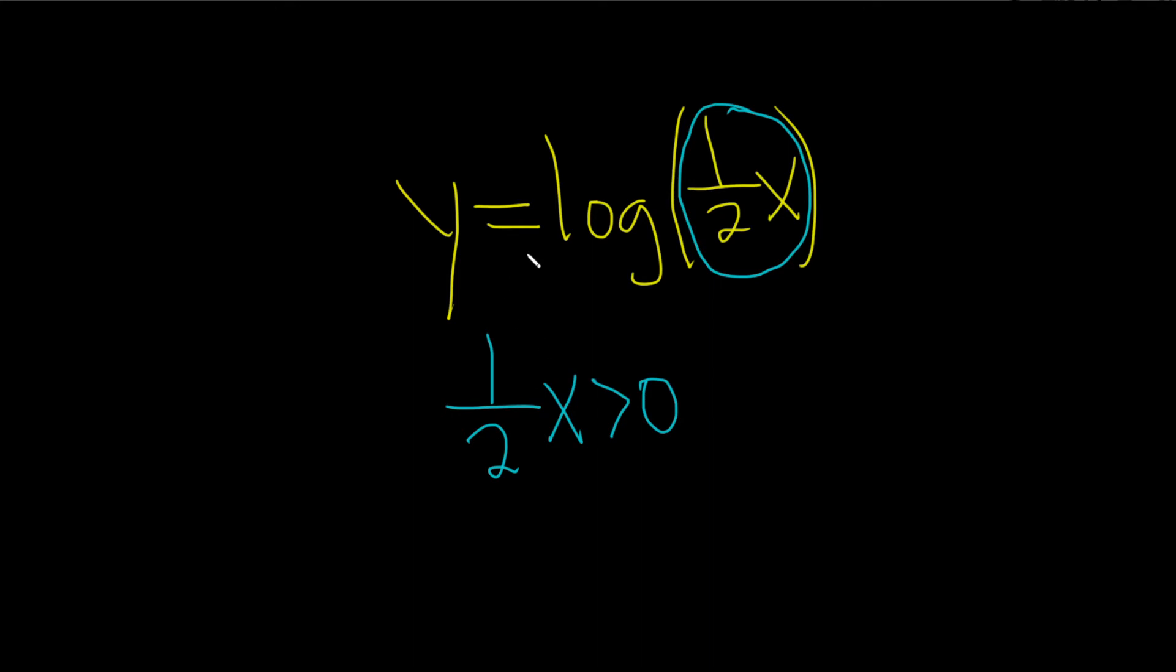And then just try to solve for x. In this case it's pretty easy, we need to get rid of the one half, so we can just multiply by two, multiply by two.